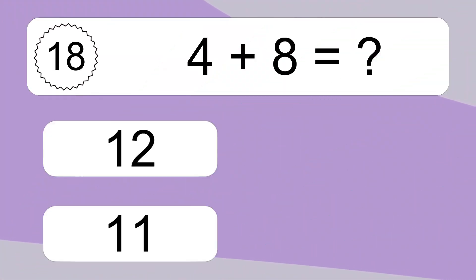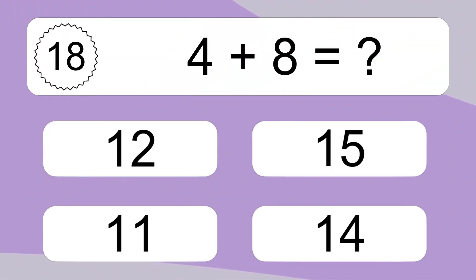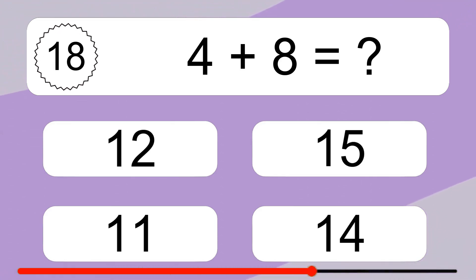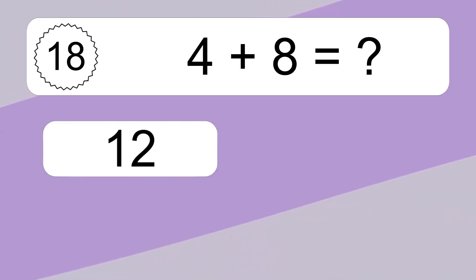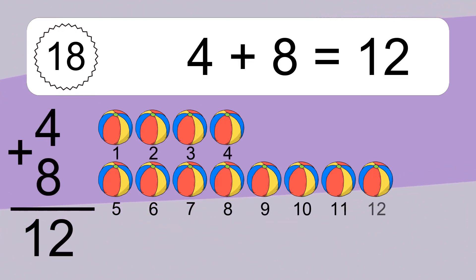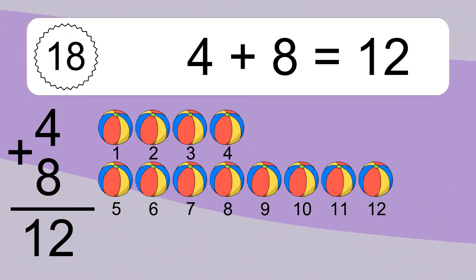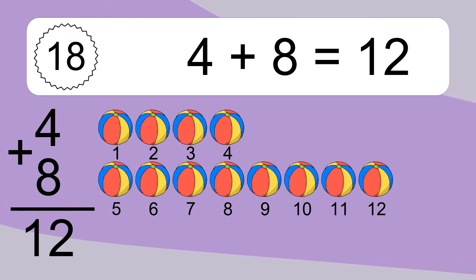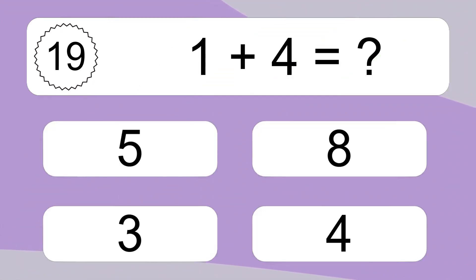4 plus 8 equals what? 4 plus 8 equals 12. Let's count it. 1, 2, 3, 4, 5, 6, 7, 8, 9, 10, 11, 12.